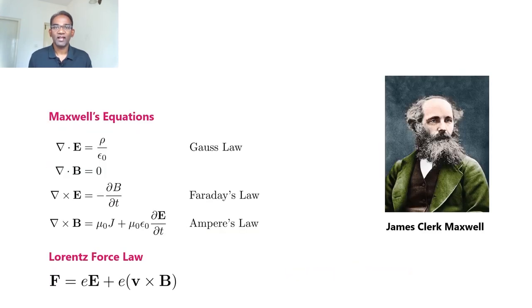These equations are named after James Clark Maxwell, mathematician and physicist, who between 1861 and 1862 published an early form of these equations together with the Lorentz force law. Maxwell didn't invent these equations, but he combined the equations by Gauss, Coulomb, Faraday, and Ampere to propose a set of equations that could predict the existence of electromagnetic waves.